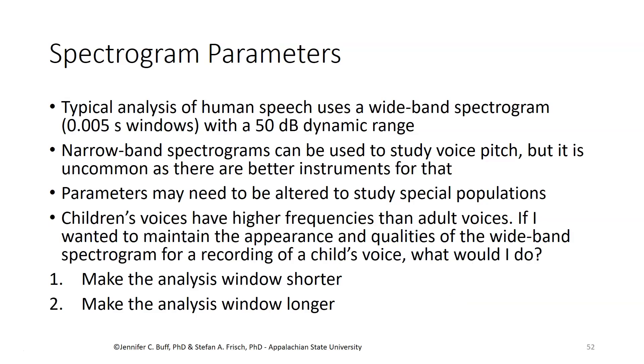So the typical analysis uses 5 millisecond, 0.005 second windows and has a 50 dB dynamic range. Those are the default parameters in the Praat program, for example. We can use the narrowband spectrogram to look at how the voice pitch changes over the course of a sentence, for example. But it's not a common thing to do because we have better ways to look at that than through a spectrogram. But we do sometimes need to mess with these parameters in order to study particular populations.